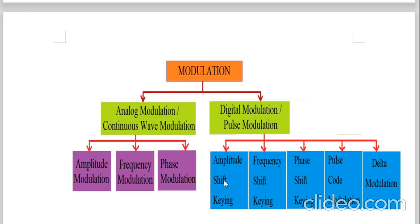You can change the amplitude of the carrier — that is called amplitude modulation. If you change the frequency of the carrier without changing amplitude and phase, that is called frequency modulation. And if you change the phase of the carrier without changing amplitude and frequency, that is called phase modulation. For digital modulation, there are: amplitude shift keying, frequency shift keying, phase shift keying, pulse code modulation (PCM), and delta modulation.